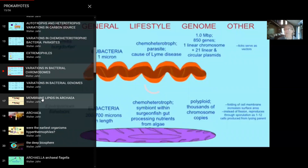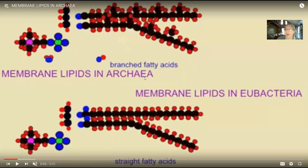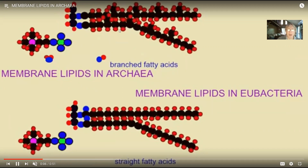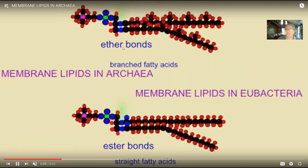We split bacteria into two groups which go back, as far as we can tell, to very early in life's history. There are the eubacteria, what we typically think of as bacteria. But then there's a second group called archaea, and they are so different from eubacteria that they are put in an entirely separate group. For one, their cell membranes are made of very different types of lipids - you can see there's branching in the fatty acids in archaea which eubacteria don't have.